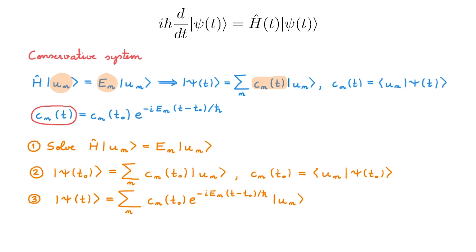We can now see the power of solving the problem in the energy basis. The time dependence is trivial because each C coefficient evolves independently in time, and the time evolution is governed by the corresponding energy eigenvalue E_n. So once we have defined the energy basis by determining the eigenvalues and eigenstates of the Hamiltonian in step one, steps two and three follow immediately. This means that for conservative systems, the difficult step is step one, so most of our time doing quantum mechanics is actually dedicated to solving this eigenvalue equation for different Hamiltonians depending on the system we have.